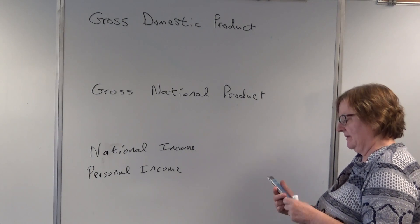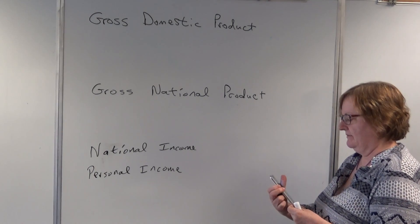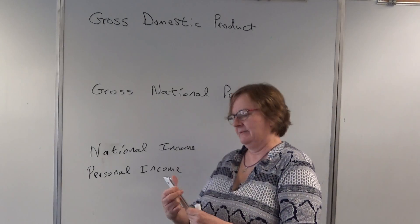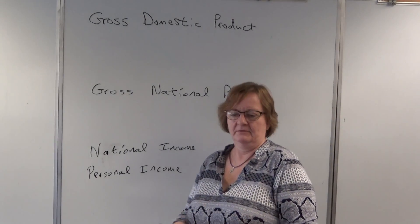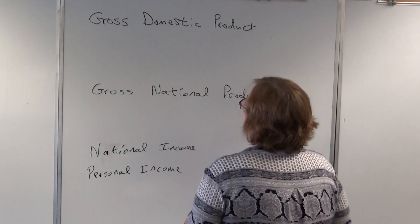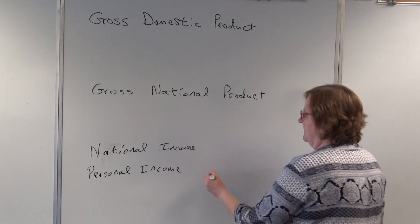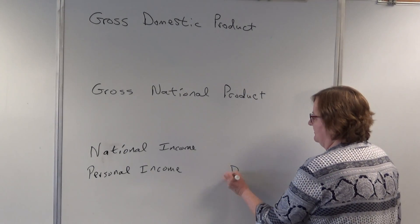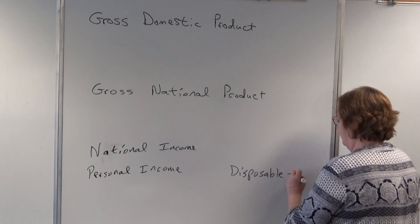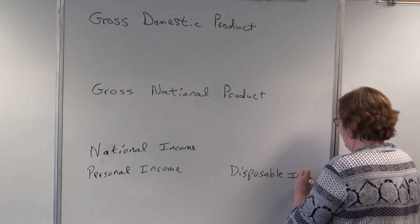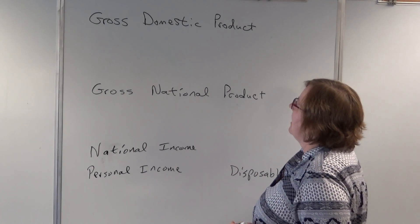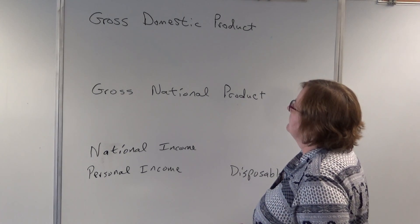...and disposable income. These are the main ones we're going to talk about as measures. We're going to start with gross domestic product.